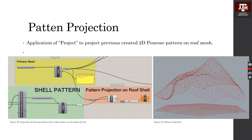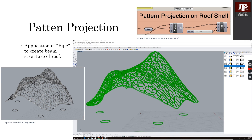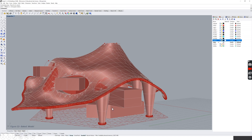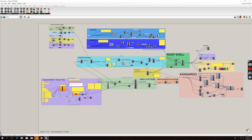The next step is to project a pattern. I created a Penrose pattern to project it on the roof shell. Finally, I used the pipe component to create some beams for this shell. This is what I baked in Grasshopper, and this is the final graph.